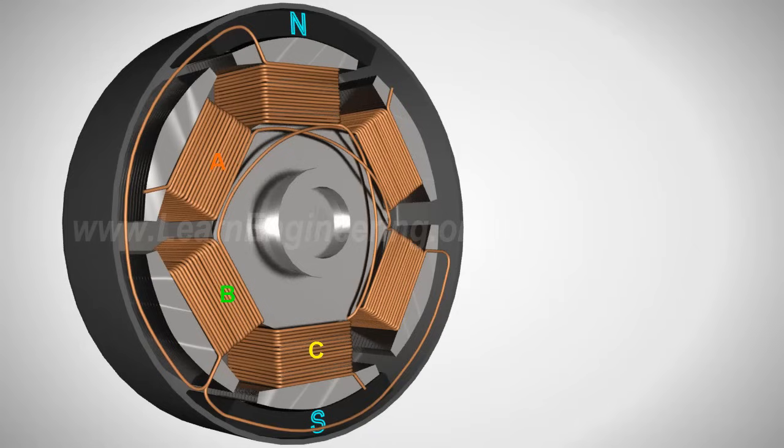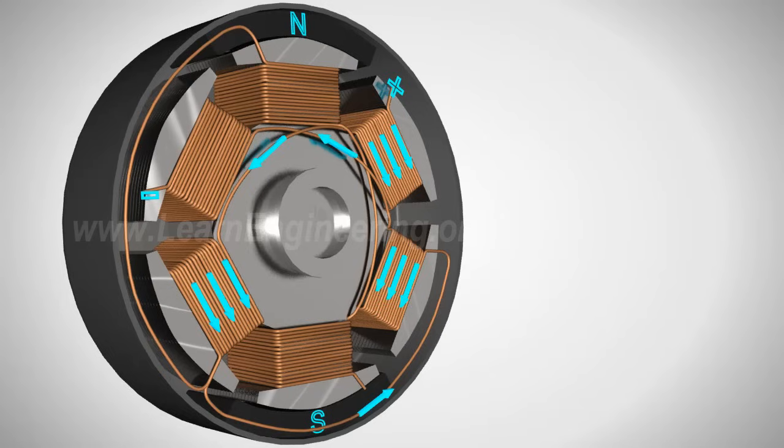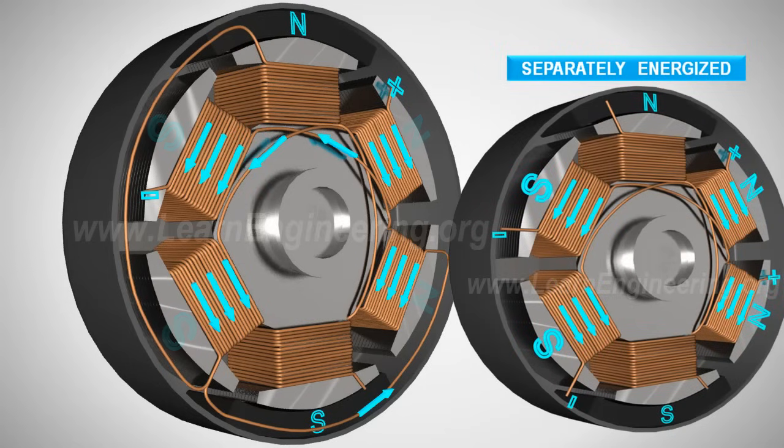When the power is applied between coils A and B, let's note the current flow through the coils. It's just like the separately energized state.